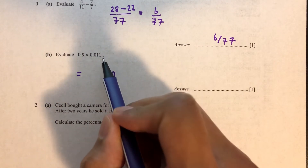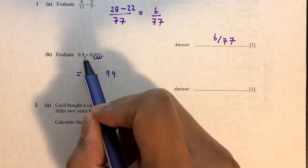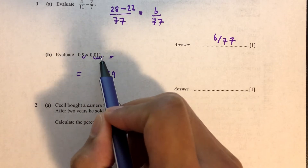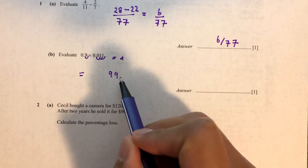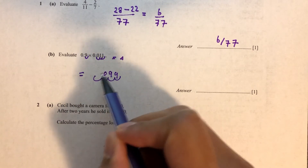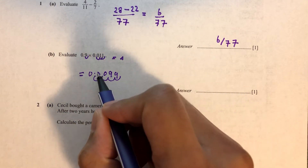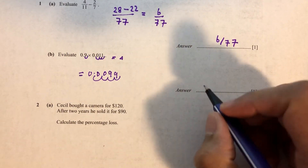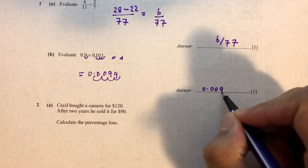So now we have 3 decimal places and 1 decimal place. We add all the decimal places — it will be 4 decimal places in total. So we move 1, 2, 3, 4. So that's the number for this calculation: 0.0099.